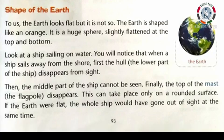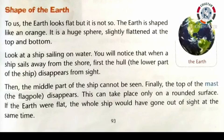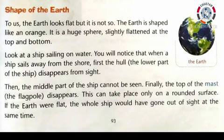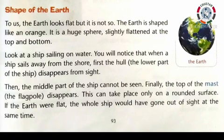Look at a ship sailing on water. You will notice that when a ship sails away from the shore, first the hull — that is the lower part of the ship — disappears from sight. Finally, the top of the mast — that is the tall pole — disappears. This can take place only on a round surface. If the Earth were flat, the whole ship would have gone out of sight at the same time.